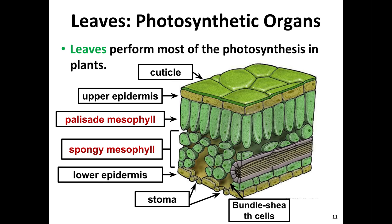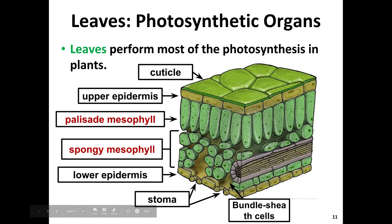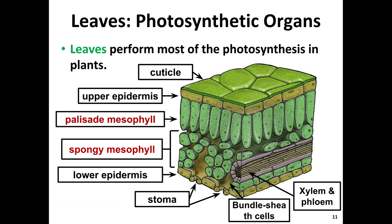The bundle sheath cells — shown here in purple — form a barrier around two organs inside leaves known as the xylem and the phloem. The xylem and phloem make up the vascular tissue of the plant, where water can be transported and sugar sources can be transported as well.